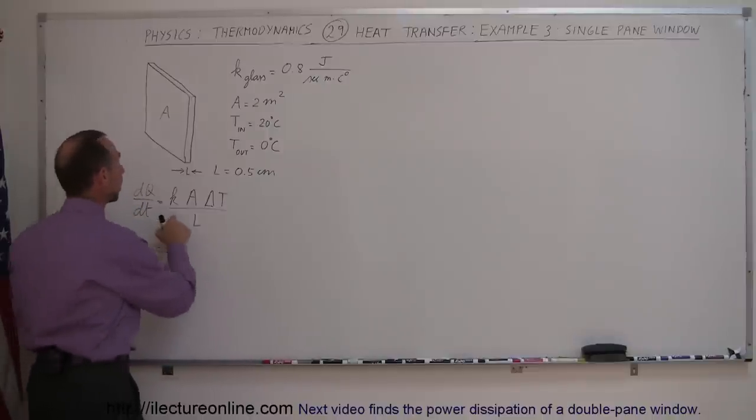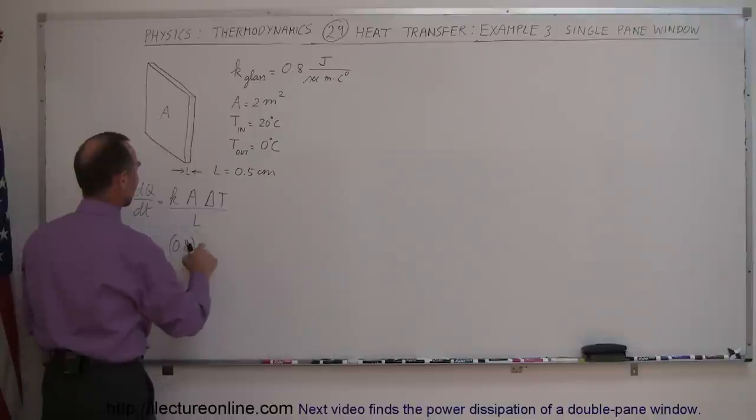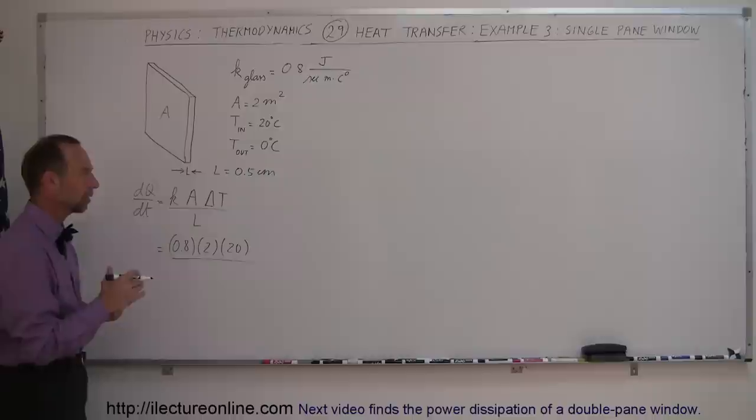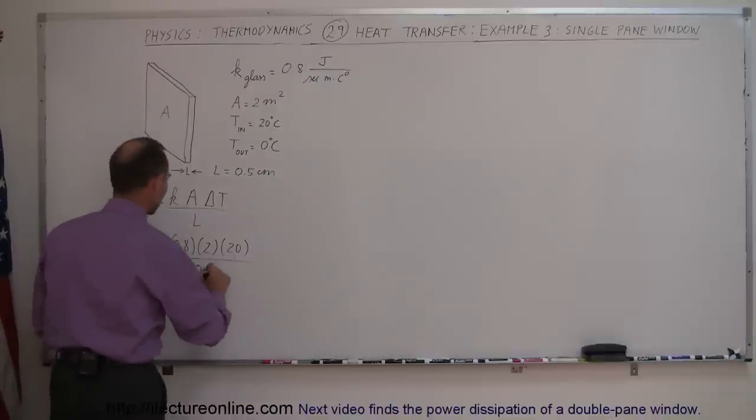Now plug in the numbers: K is 0.8, the cross-sectional area is 2 square meters, the temperature difference between outside and inside is 20 degrees Celsius, and the length is 0.5 centimeters. We convert that to meters: 0.005 meters.